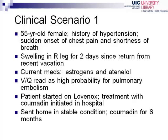This clinical scenario presents additional information for formulating a number of answerable questions. In a 55-year-old female with a history of hypertension, sudden onset of chest pain, and shortness of breath, with swelling in the right leg for two days since return from a recent vacation, on estrogens and atenolol, with a VQ scan read as high probability for pulmonary embolism — the patient was started on Lovenox, treatment with Coumadin initiated in hospital, and sent home in stable condition on Coumadin for six months. This case generates several types of questions: a diagnosis question, a therapy question, and an etiology question.